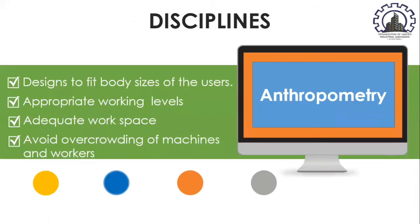We will discuss the first discipline associated with ergonomics — anthropometry. Anthropometry refers to the physical measurement of the human body. According to Ciro Romelio Rodriguez-Añez (2001), since ergonomics is the science of work, the people who do it, the way it is done, the tools and equipment they use, the places they work in, and the physiological aspects of the working environment, anthropometry helps design to fit body sizes of users, appropriate working levels, adequate workspace, and also helps avoid overcrowding of machines and workers.